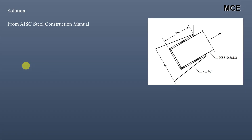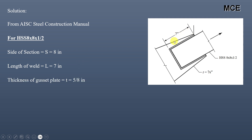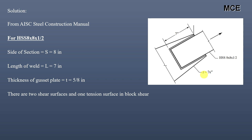From the AISC Steel Construction Manual, for hollow square section 8×8×1/2, the side of the section is 8 inches. We can see from the figure that the length of the weld is 7 inches and the thickness of the gusset plate is 5/8 inch. In this block shear failure we have two shear surfaces and one tension surface. The two shear surfaces are parallel to the force, and the one tension surface is perpendicular — normal — to the force.